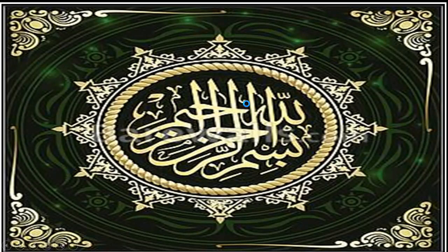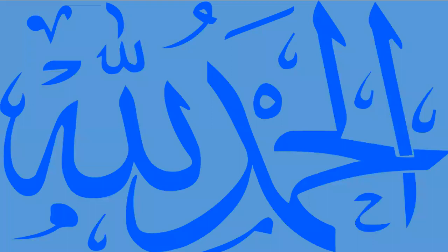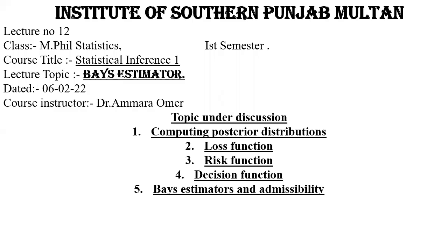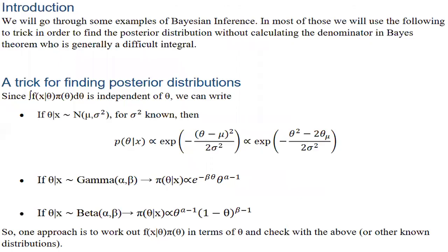We have reached the second last lecture, alhamdulillah, and this lecture is about the last topic of the course: statistical inference — Bayesian estimation. Under this topic we will discuss computing of posterior distributions, loss function, risk function, decision function, Bayesian estimators, and admissibility.